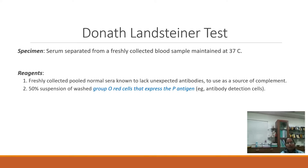Now coming to the steps of the DL test. The requirements: first, the specimen — serum separated from a freshly collected blood sample maintained at 37 degrees Celsius. Next, freshly collected pooled normal sera, known to lack any unexpected antibodies, to be used as a source of complement. This is required because PCH patients may not have adequate complement. Finally, a 50% suspension of washed group O red cells that express the P antigen — antibody detection cells can be used.